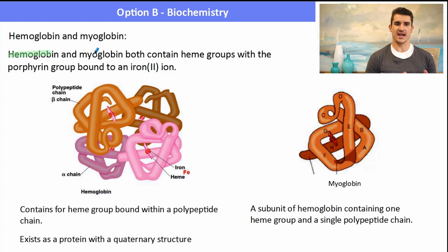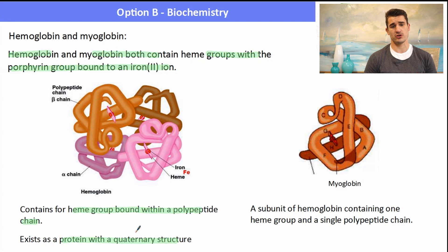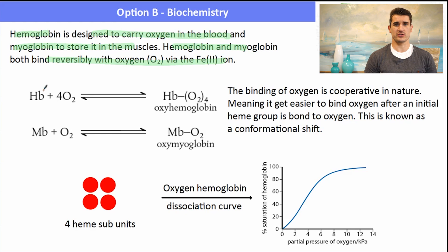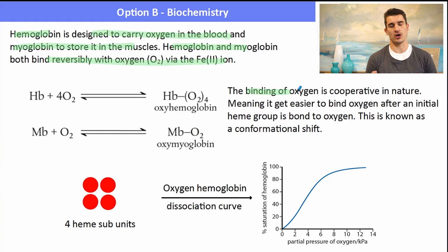Hemoglobin and myoglobin both contain heme groups within a porphyrin group bound to an Fe²⁺ ion. Hemoglobin has four heme groups within four polypeptide chains, giving it a quaternary structure. A subunit containing only one heme group in a single polypeptide chain is myoglobin. Hemoglobin carries oxygen in the blood, while myoglobin stores oxygen in the muscles. Both reversibly bind oxygen via the Fe²⁺ ion — hemoglobin binds four O₂ molecules to form oxyhemoglobin, and myoglobin binds one.